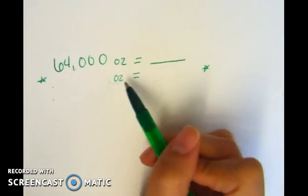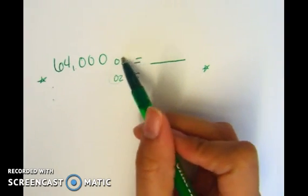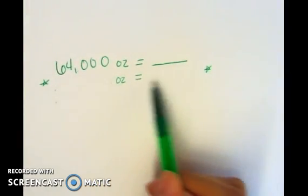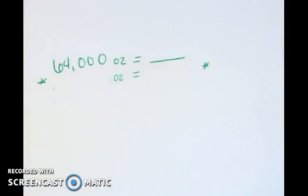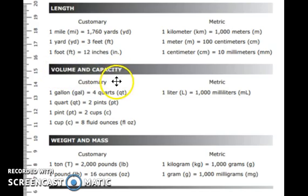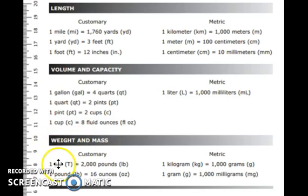I cannot have ounces and cups — the units have to be the same. To find out what I'm going to write, I need to look at my star chart. Now that I have my star chart in front of me, I need to look for ounces. This section is length, so I don't need to look there. Volume and capacity means how much something can hold inside — how much liquid. And ounces is not there. So I need to go to weight and mass — how much something weighs — and I see ounces are right here.